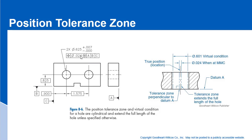Our tolerance is a positional tolerance of 24 thousandths in a diametrical shape. We have the MMC modifier, so that puts us in a position where we can calculate virtual condition. The maximum material condition for the hole is 625 thousandths. If we subtract 24 thousandths, we get a virtual condition of 601 thousandths.